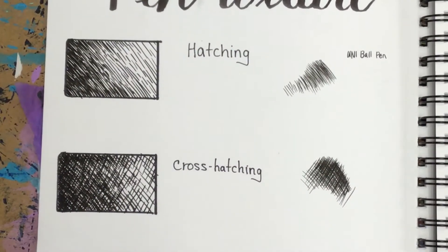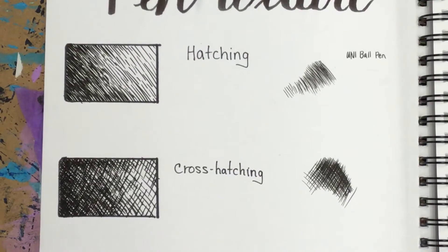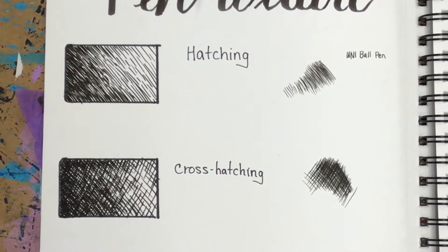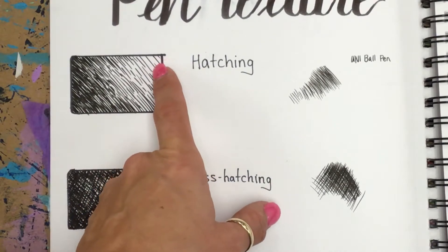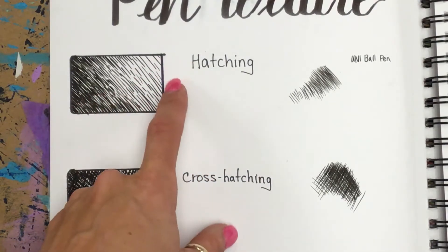Remember when you're making your lines: if they're closer together they're going to look darker, if they're further apart then they look lighter. So I put a coat of light lines all the way across and then I gradually get darker.